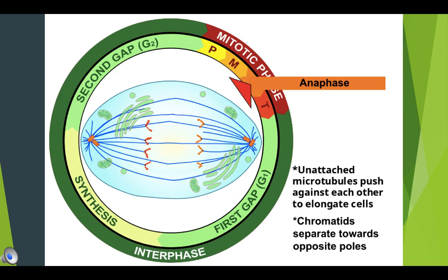In the anaphase stage, the centromere attaching the two chromatids divides. The two sister chromatids of each chromosome separate and are drawn apart towards opposite poles, pulled by shortening of spindle fibers. It is important to note that a furrow starts in the cell membrane at the middle in the animal cell.